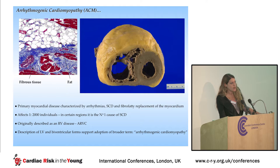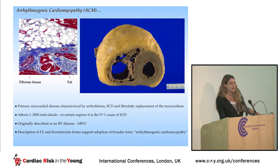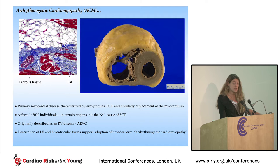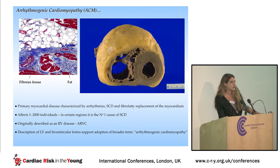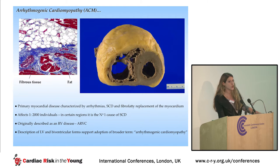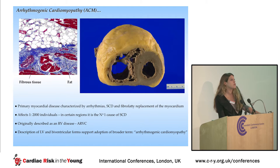It was originally described as a right ventricular disease, and hence given the name arrhythmogenic right ventricular cardiomyopathy. But the fact that recently we have identified left dominant and biventricular forms has prompted the adoption of the broader term arrhythmogenic cardiomyopathy.